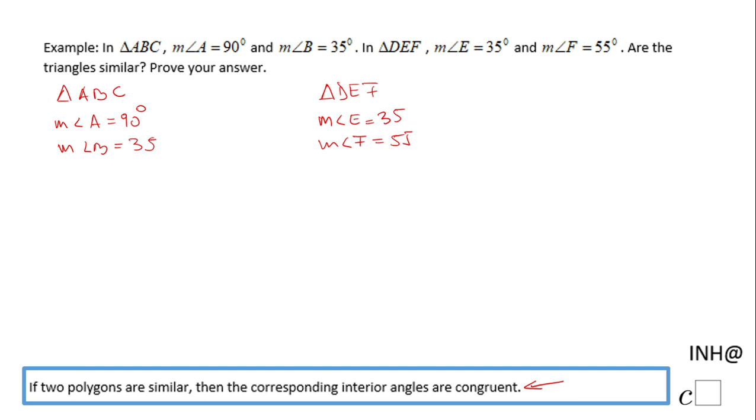I'm going to use this statement which says if two polygons are similar, then the corresponding interior angles are congruent. This tells us that we need to find the third interior angle for each triangle.